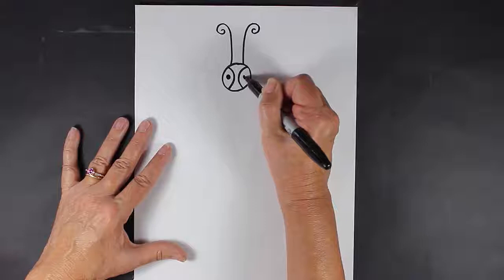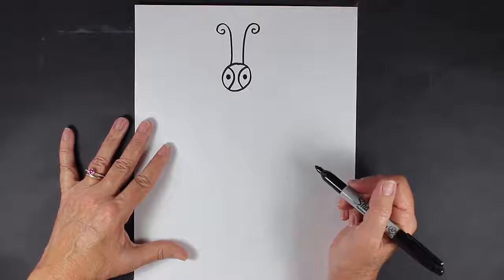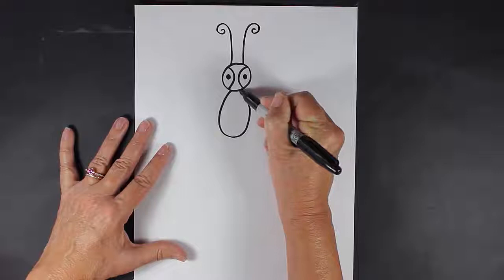We're going to put dots inside of those lines and those are going to be our eyes. For our dragonfly, let's make his midsection, which is, I guess, probably looks like an elongated C that's upside down.